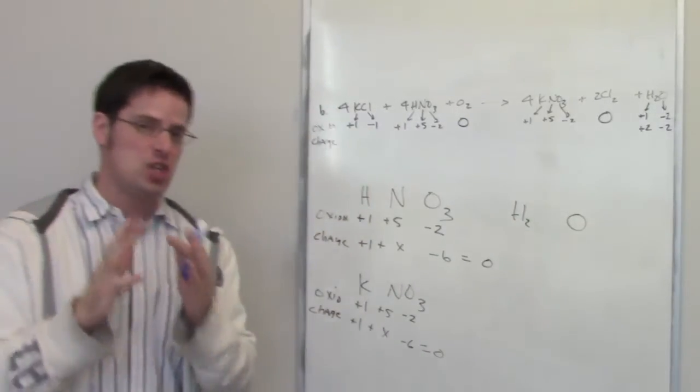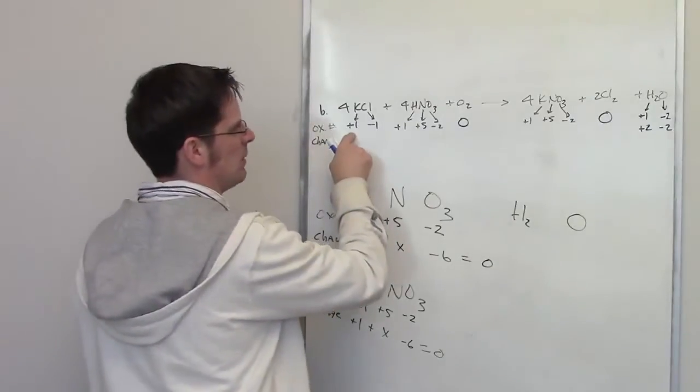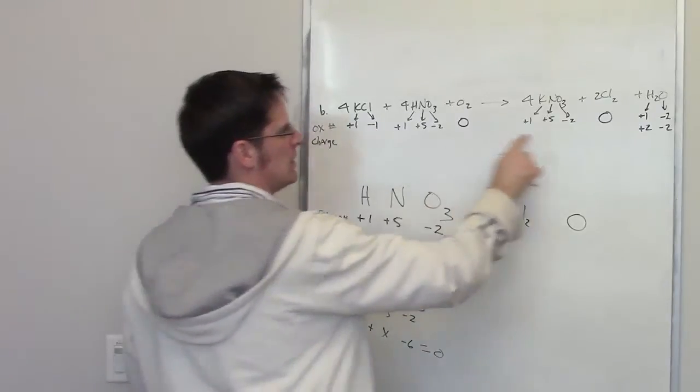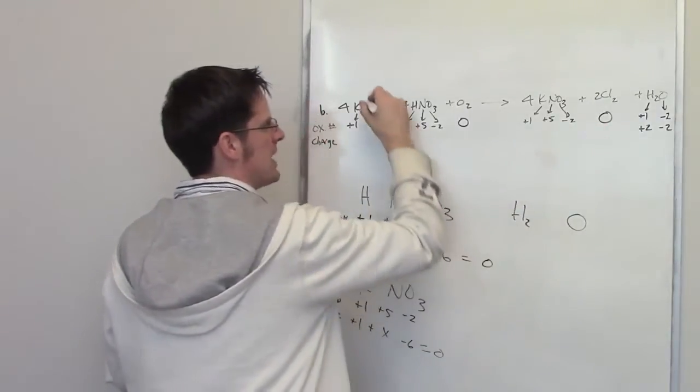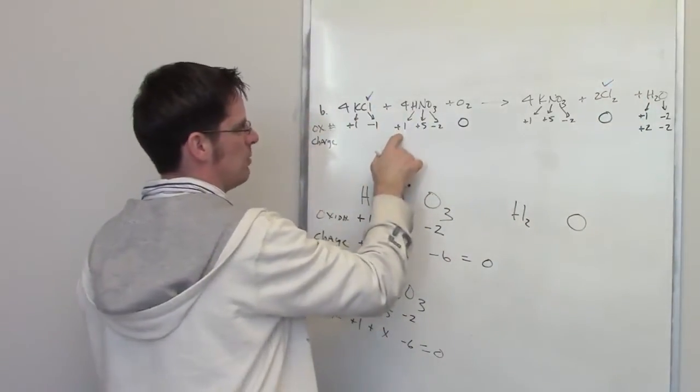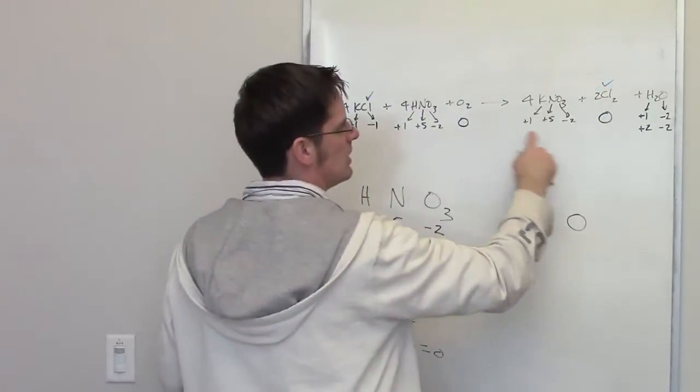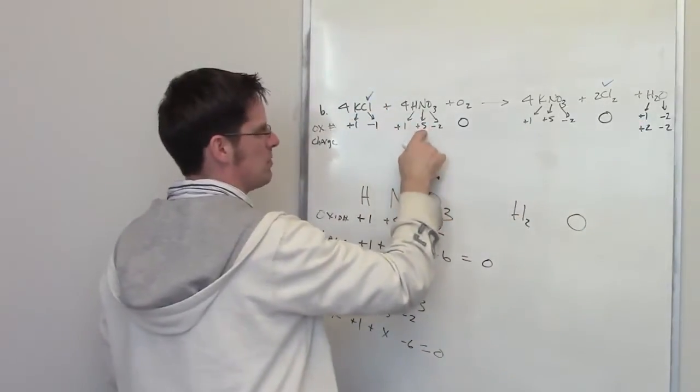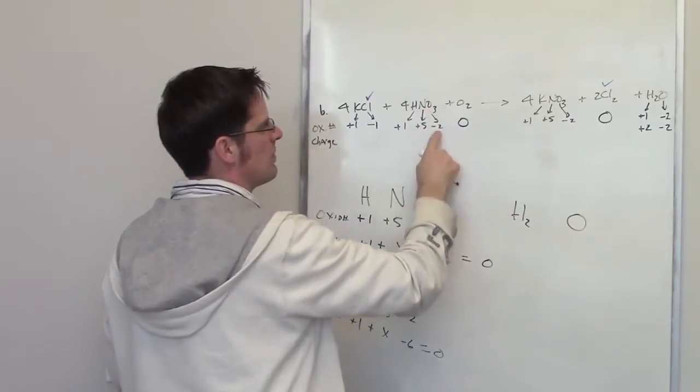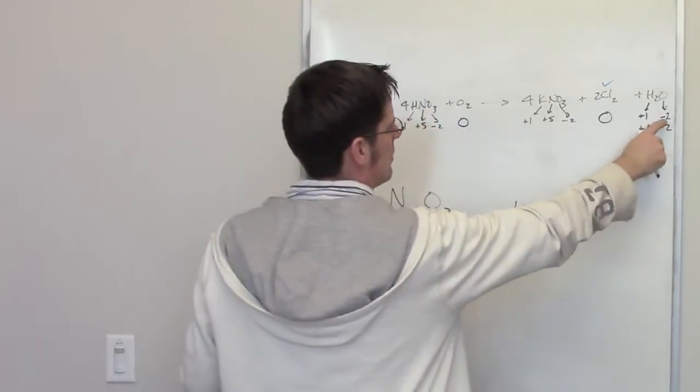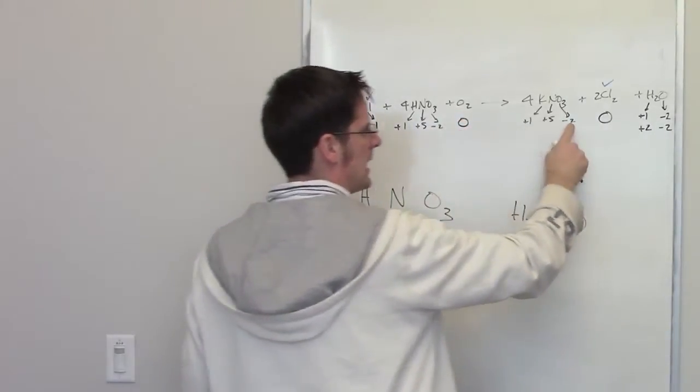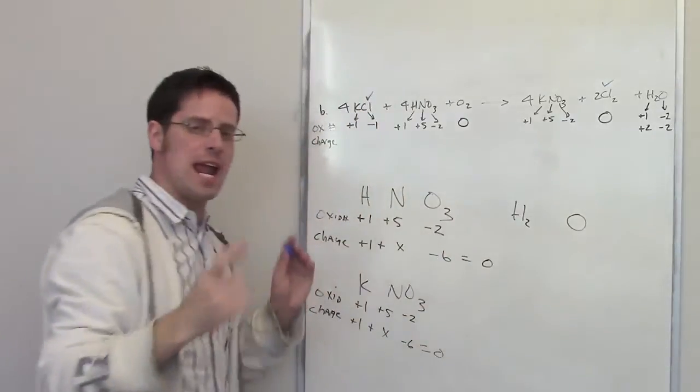Now what we have to do is look left to right and see what has changed. I've got potassium here with a plus one, then that goes to plus one. That's the same. I've got chlorine going from negative one to zero. That's a change, so I'll put a little check mark next to that. That's one of the changers. I've got hydrogen going from plus one to plus one over there. That's the same. Nitrogen going from plus five to plus five. That's the same. Oxygen going from negative two to negative two over here and negative two there. Oxygen here going from zero to negative two and negative two. That is a change. That's different.